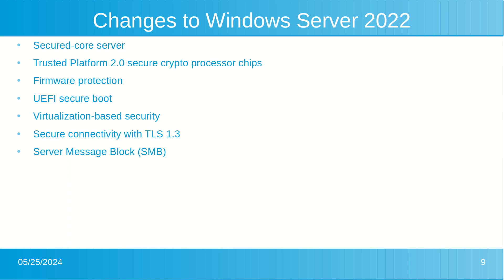SMB over QUIC updates the SMB 3.1.1 protocol in Windows Server 2022 Datacenter as well as Azure edition, and supported Windows clients use QUIC protocol instead of TCP. QUIC can run over UDP, which runs much faster.